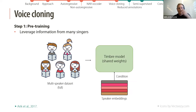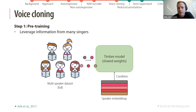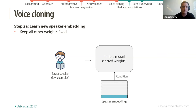Voice cloning first has a pre-training step that tries to leverage information from many different singers: we have a model where all weights are shared between all singers, and the only thing different is a set of speaker embeddings — one for each singer, usually a vector of maybe 16 numbers. Then in the second step, if we want to learn a new voice, we keep all shared weights fixed and just learn a new speaker embedding, requiring only a few training examples.